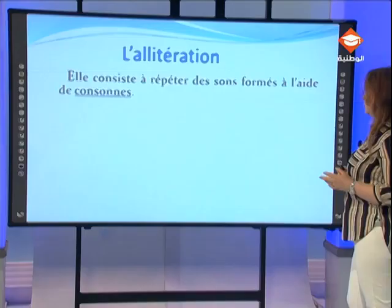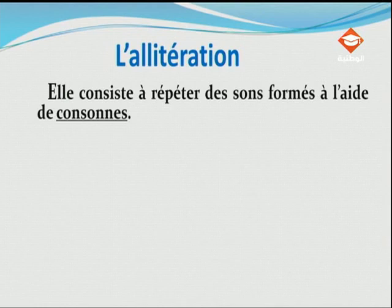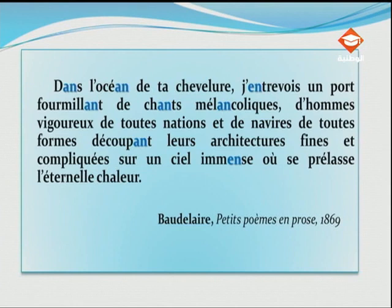L'allitération : sa définition — elle consiste à répéter des sons formés à l'aide de consonnes. Outre la musicalité et le rythme qu'elle crée, l'allitération en R pourrait suggérer l'univers maritime avec le bruit et le vacarme de son port et les chants mélancoliques de ses matelots. C'est comme si Baudelaire nous invitait à une rêverie, à une errance, à une aventure de son et de sens.